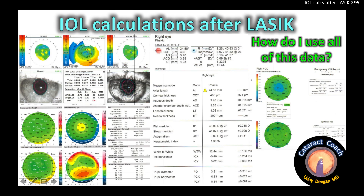IOL calculations after LASIK — how do you use all of this data and do you need to? On this page we see a lot of biometric data measuring the eye, lots of parameters, and there's a lot of overlap. What's actually important?